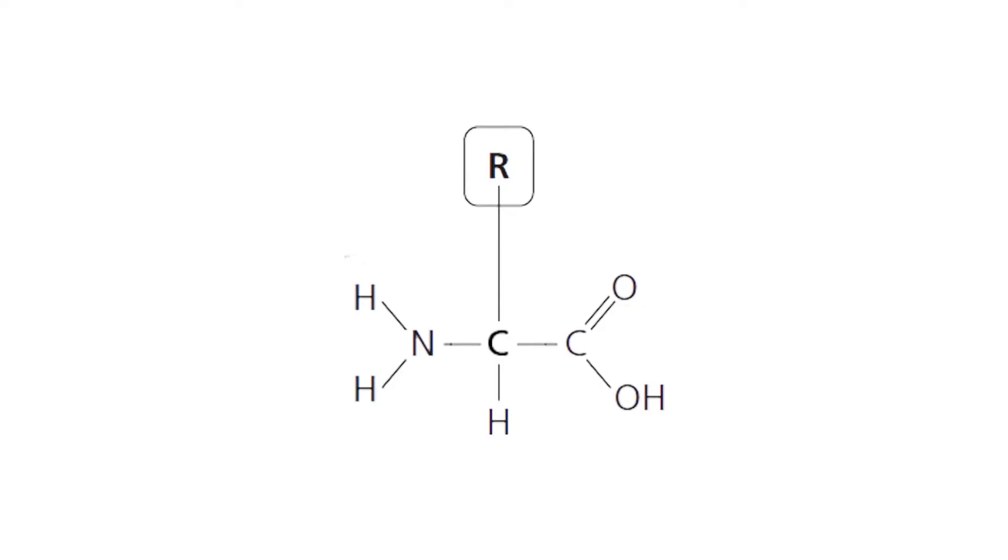Amino acids are the basic monomer of which all proteins are constructed. They come in 20 different variations. Now let's take a look at the general formula for an amino acid.